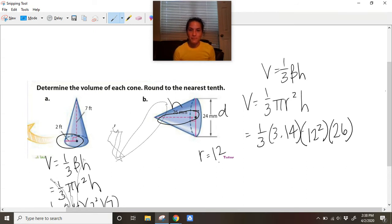I'm going to type in my calculator: 1/3 × 3.14 × 12² (which I know is 144) × 26, and I get 3918.72, which would be 3918.7 millimeters cubed. And there is my volume.